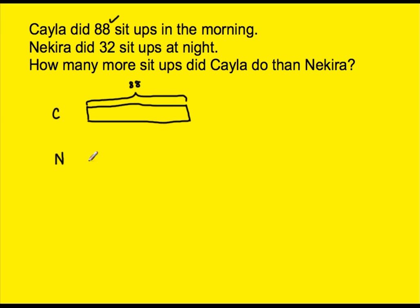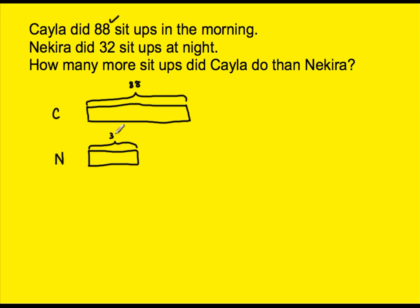Next I go to Nakira. Nakira is right here. Nakira did 32 sit-ups at night. I know that 32 is a smaller number than 88, so I'm going to draw the bar smaller than 88. This bar is 32, and it represents Nakira's sit-ups right here.